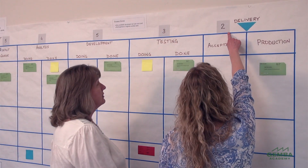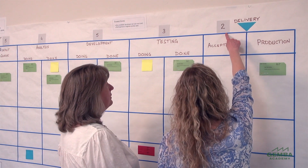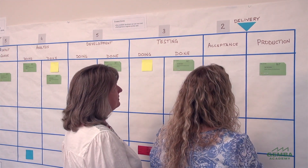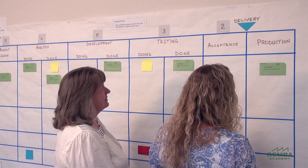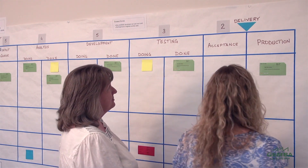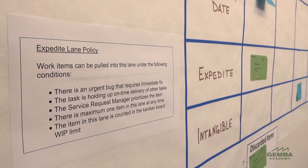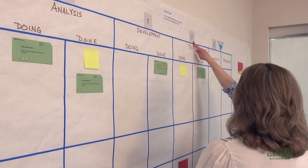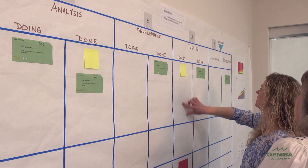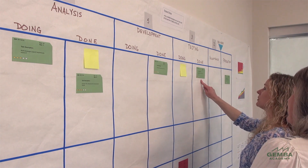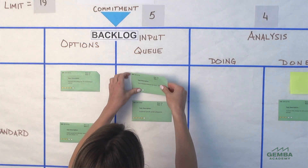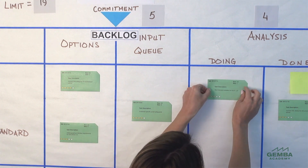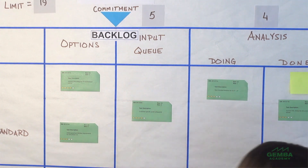The right side of a Kanban board represents the work committed, in progress, or finished. Teams use the right side to manage workflow in the present. The Kanban board visualizes the status of all work items in progress, as well as their priority. Kanban boards are designed to give team members the information they need to execute the plan. As capacity becomes available, they pull the next most important task from ready to doing and begin working on it.